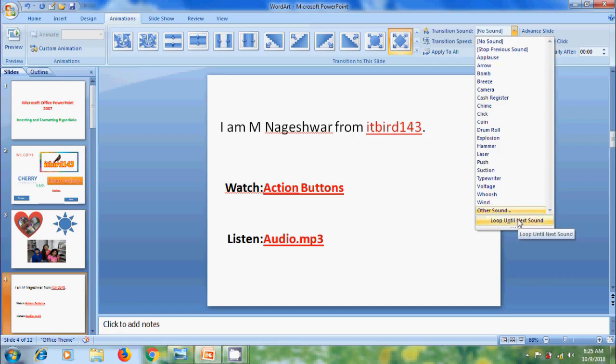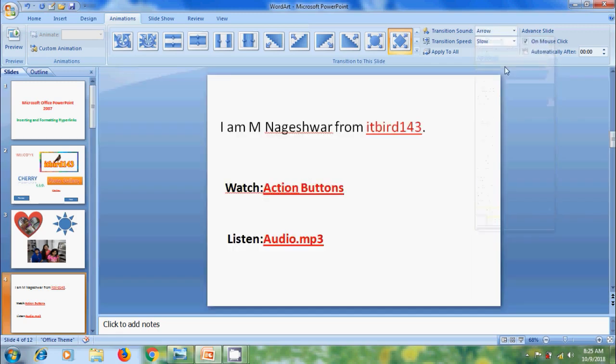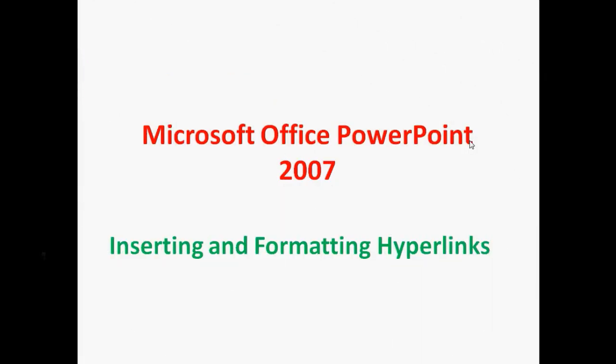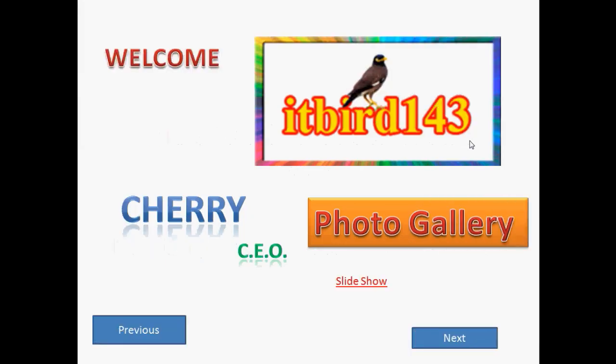Here I want to add the arrow sound and click on Apply to All. Now let's run the slide show. Here we will get the transition effect along with the sound.